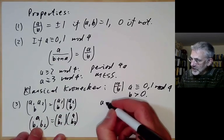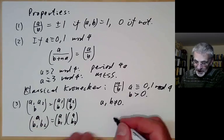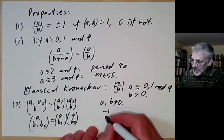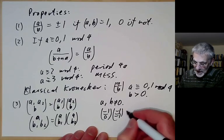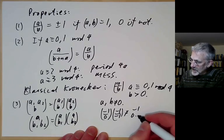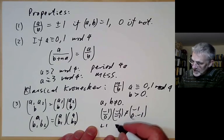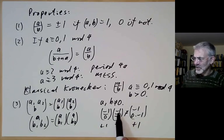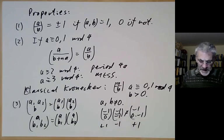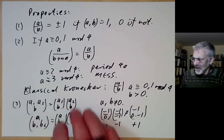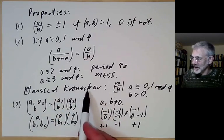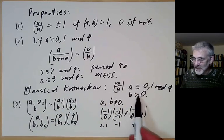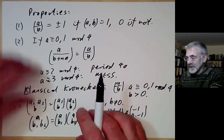Unfortunately, multiplicativity only holds for a and b non-zero. When a or b are zero it breaks down: for example, (0/−1)(−1/−1) is not equal to (−1/0)(−1/−1). There doesn't seem to be any good way to fix this, which gives a strong case for restricting the Kronecker symbol to at least b being positive, as there's no actual reason to allow b negative.